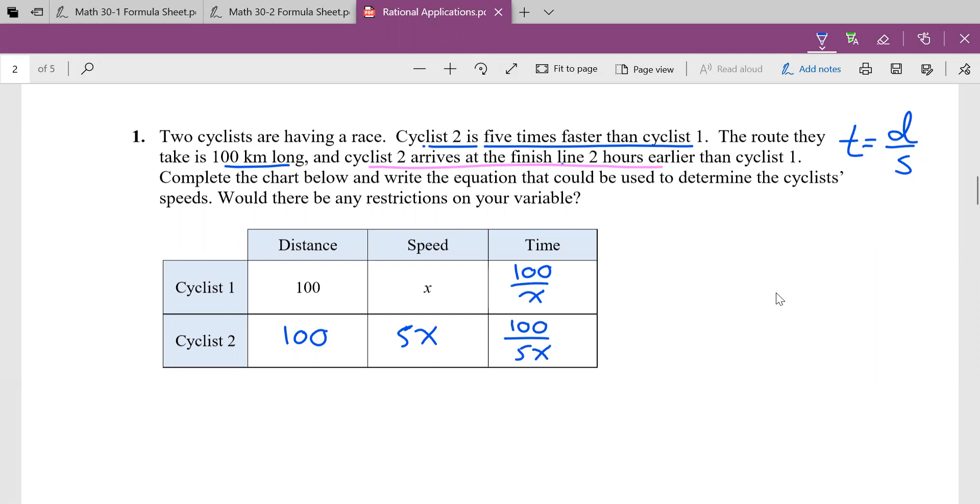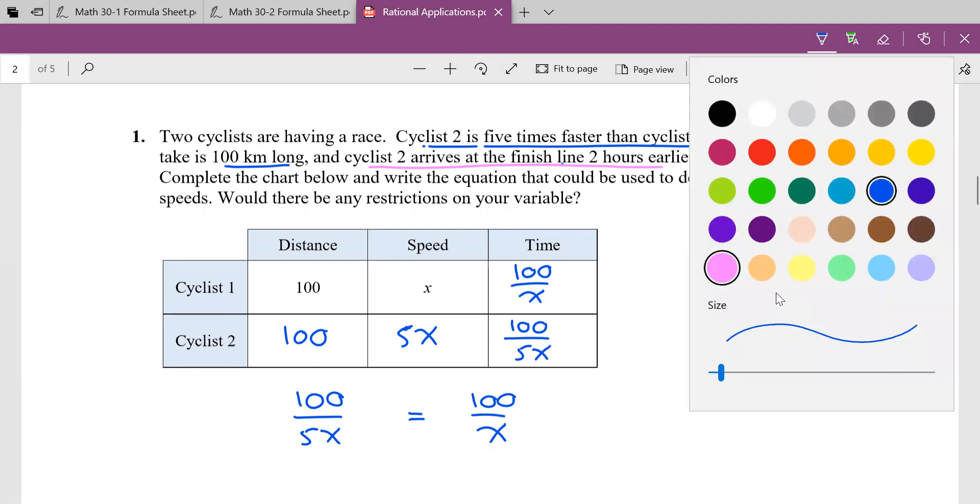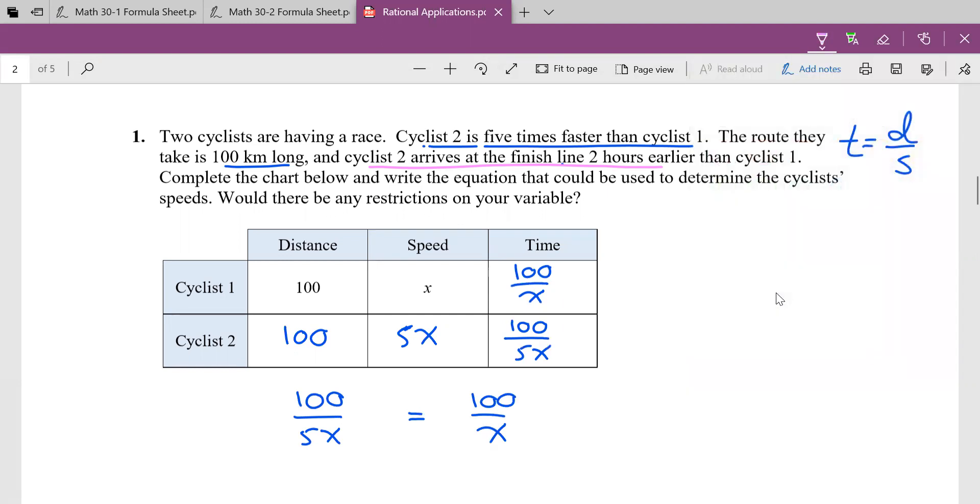Then what we have is this cyclist two arrives two hours earlier. I'm going to worry about that in a second. Let's start making an equation. Well, an equation means that these are equal to each other. So I set them equal to each other. Cyclist two is equal to cyclist one. But they're not equal to each other because it says cyclist two arrives two hours earlier. So what do I do with that two? Here's what I like to say. I just like to make up a random time off to the side. What if it took cyclist two, let's just say 10 hours. I'm just making it up.